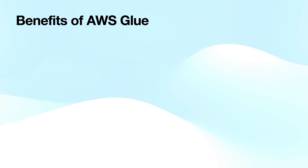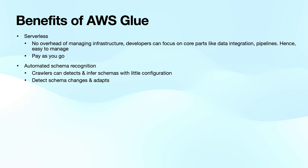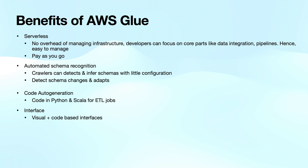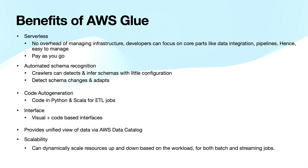Let's have a look at the pros of AWS Glue. It is serverless, hence no overhead of managing infrastructure. You pay as you go. Glue provides crawlers with automatic schema inference for semi-structured and structured datasets. It can detect and infer schema with little configuration and can also adapt to schema changes. Glue automatically generates the script you need to extract, transform, and load your data from source to target, so you don't have to start from scratch. It also provides visual plus code-based interfaces to make data integration easier, a unified view of data via AWS Data Catalog, and can dynamically scale resources based on workload.